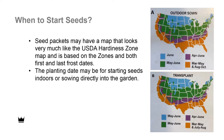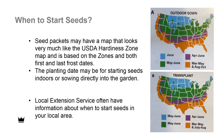The big question is when to start seeds. Seed packets may have a map that looks very much like the USDA hardiness zone map, and it's based on the zones in both first and last frost dates. Be sure to read the packet carefully, because the planting date may be for starting seeds indoors or sowing seeds directly into the garden. Your local county extension service may have more information about when to start seeds in your local area.